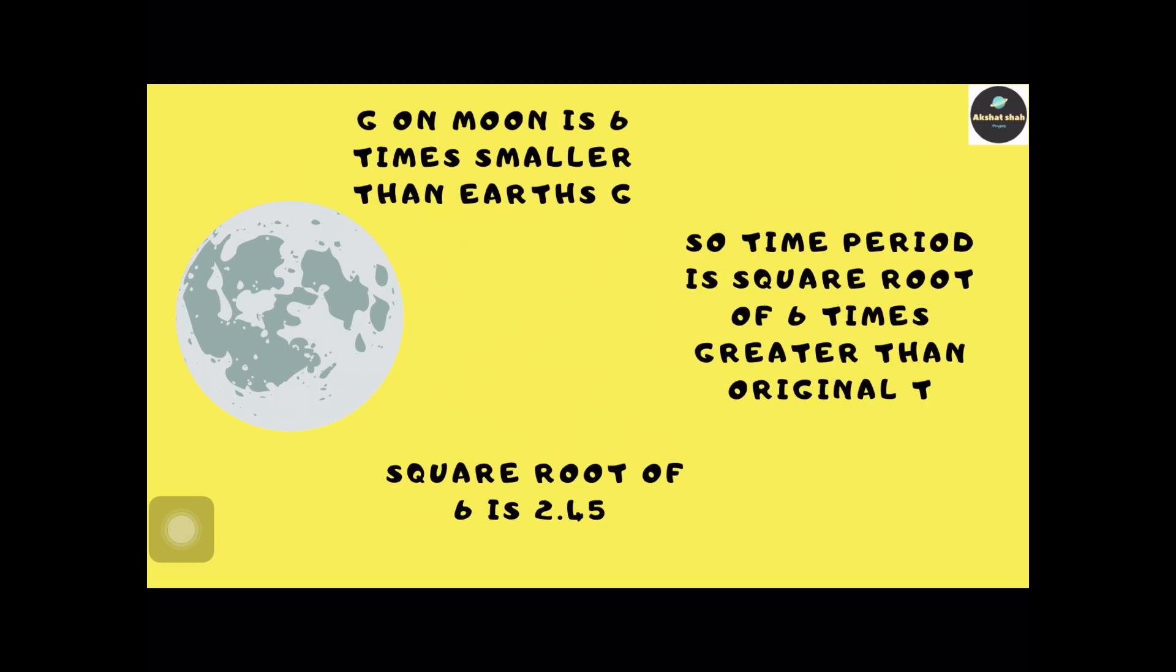In our case, the Moon has a gravitational acceleration 6 times smaller than the gravitational acceleration produced by Earth. Therefore, time period is square root of 6 times greater than the original time period on Earth.